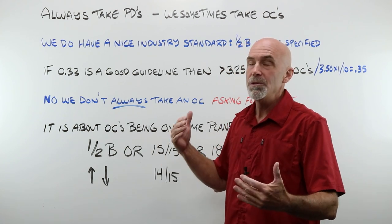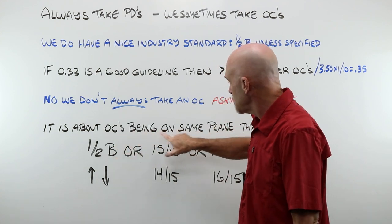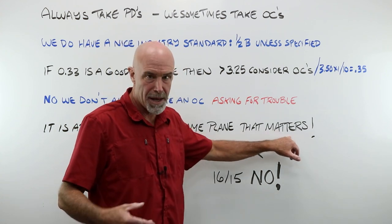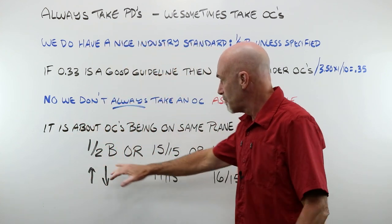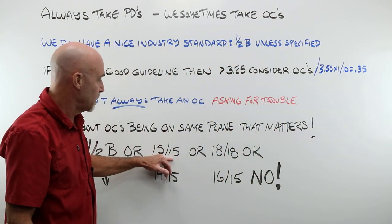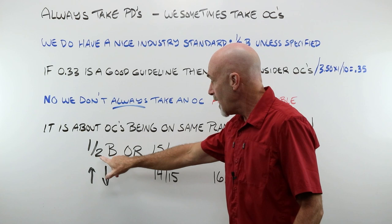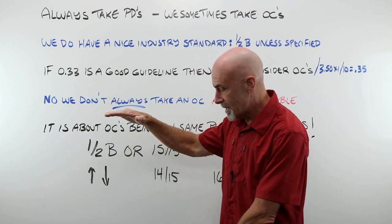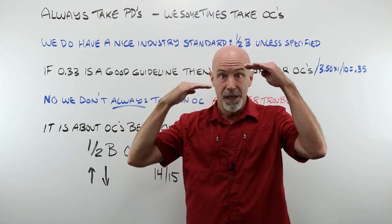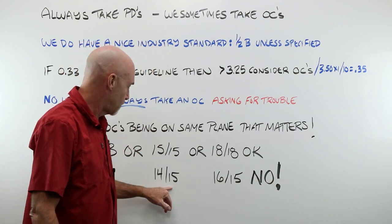Because what matters here, what you're looking at, what real OC vertical imbalance is about, it's about the OCs being on the same plane. That's what matters. Okay, if they're both at half the B, you're good. If you give an OC height of 15, it's 15-15, you're good. 18-18, you're good. If you have half a B and one OC's up and one is down, it's no good. They aren't on the same plane. That's when you're going to get problems.